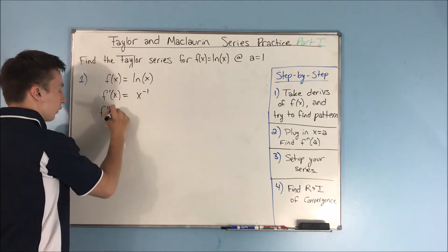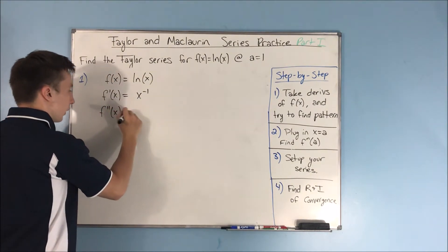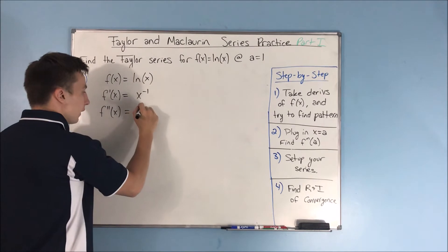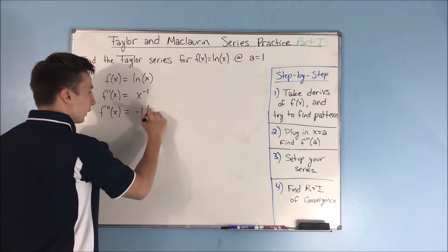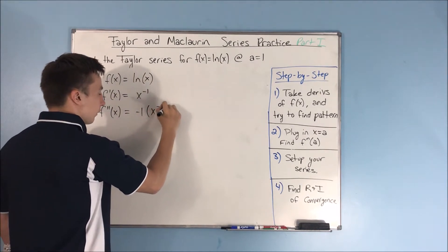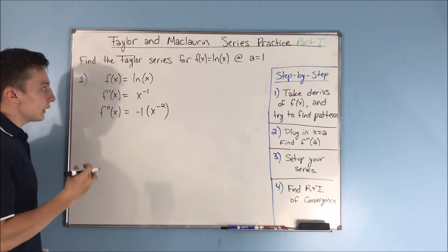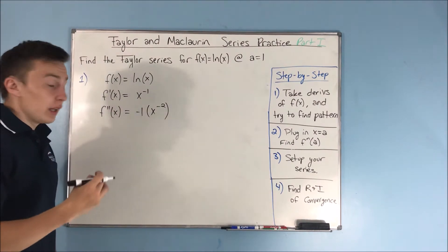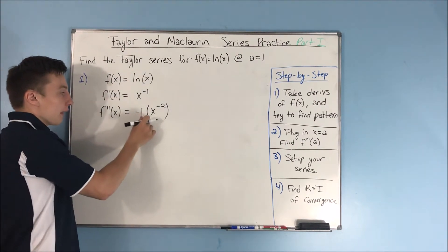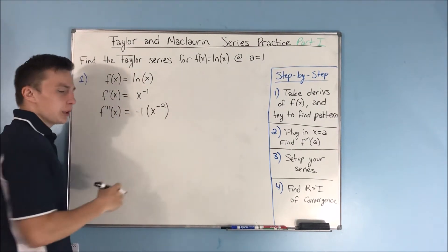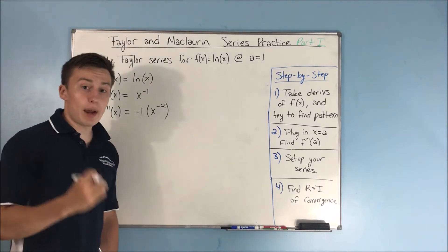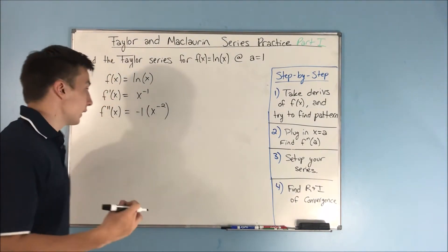If you take the second derivative, you end up with negative 1 times x to the negative 2. It's important not to combine this to be negative x to the negative 2, just because it's going to allow you to see a pattern more easily.